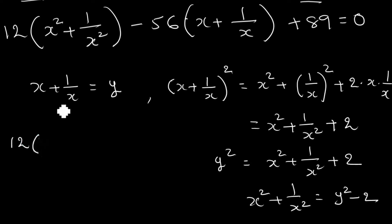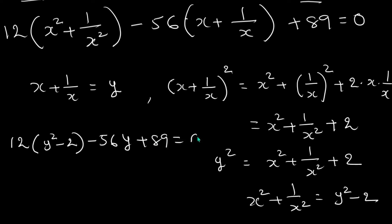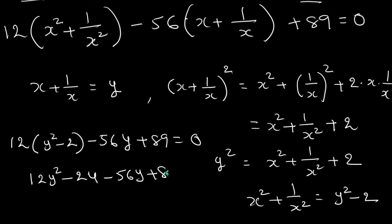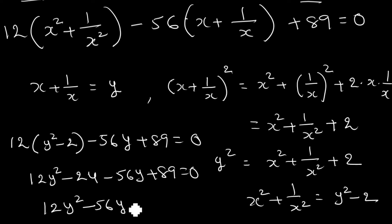So the equation becomes: 12(y² − 2) − 56y + 89 = 0. Simplifying: 12y² − 24 − 56y + 89 = 0. Further simplifying: 12y² − 56y + 65 = 0. Now we have finally converted it to the quadratic equation.